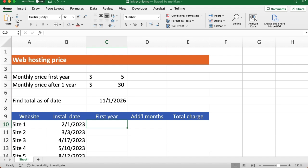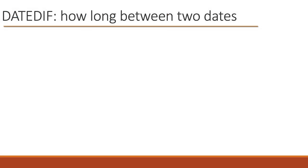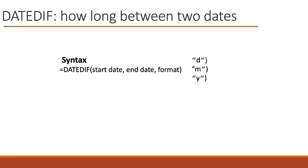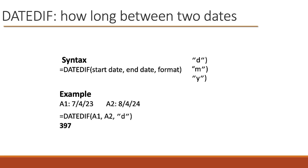So before we do this, let's take a look at the syntax for the DATEDIF function. The syntax is pretty straightforward. You say equals DATEDIF, and then we have three arguments: what's the starting date, what's the ending date, and what format do you want to use. The format can be day, month, or year, and the D, M, and Y have to be in quotation marks, otherwise it's going to give you an error. For example, if the starting date is July 4th, 2023 and the ending date is August 4th, 2024, we say equals DATEDIF with A1 as the starting date, A2 as the ending date, and D for days — and it tells us there are 397 days between them.